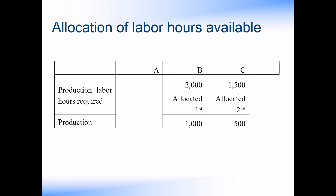The product with the next highest contribution per limiting factor was product C. If we wanted to produce the output required to meet the anticipated demand of 500 units, we would require 1,500 labour hours. So by meeting the demand for product B and product C, we would have used 3,500 hours from the 4,000 available to us.